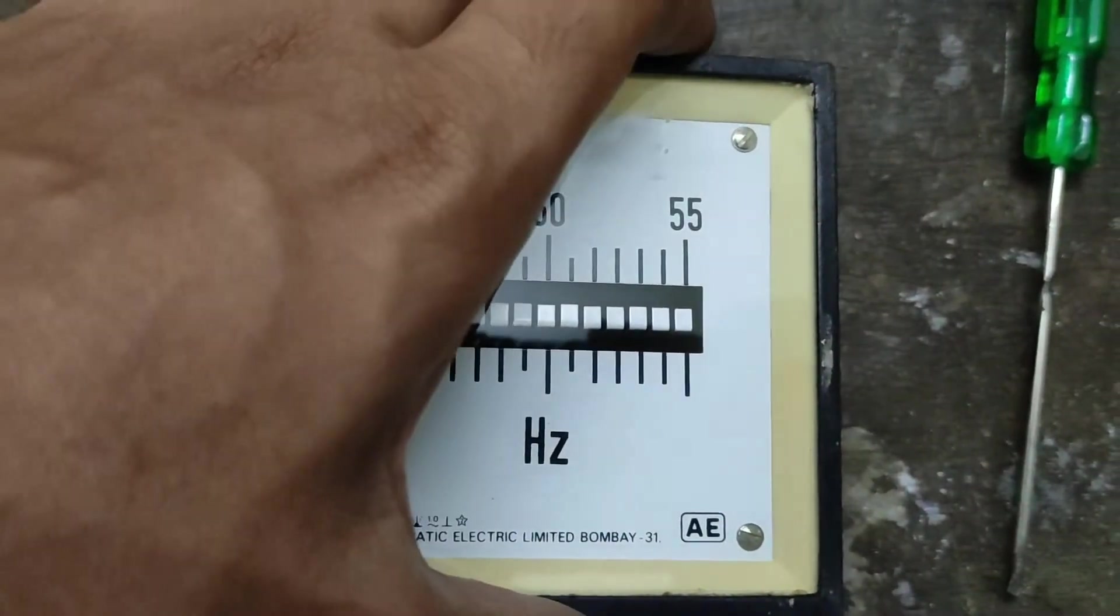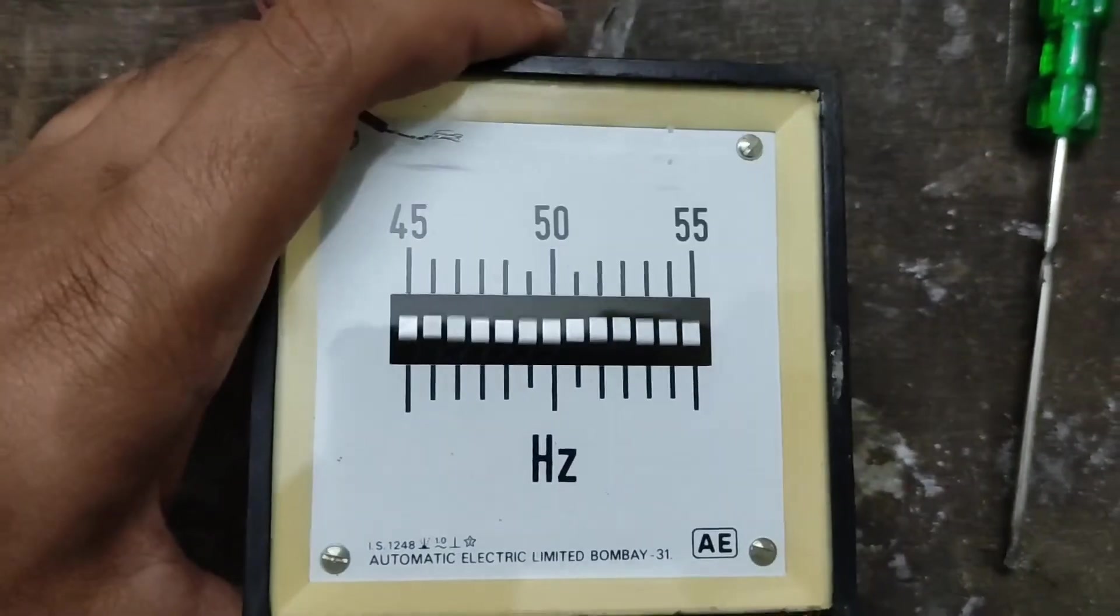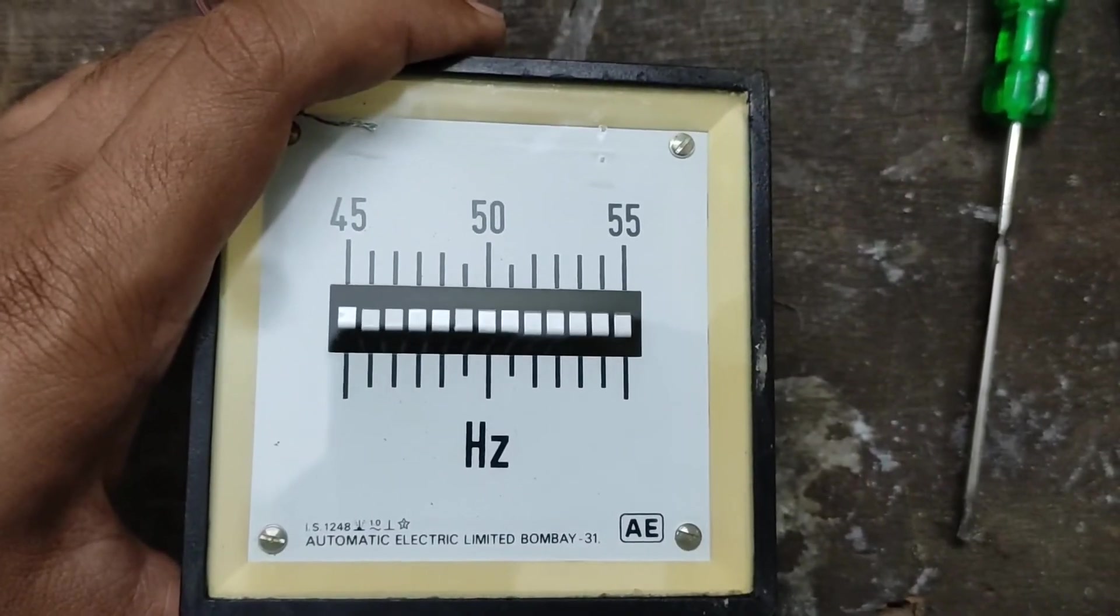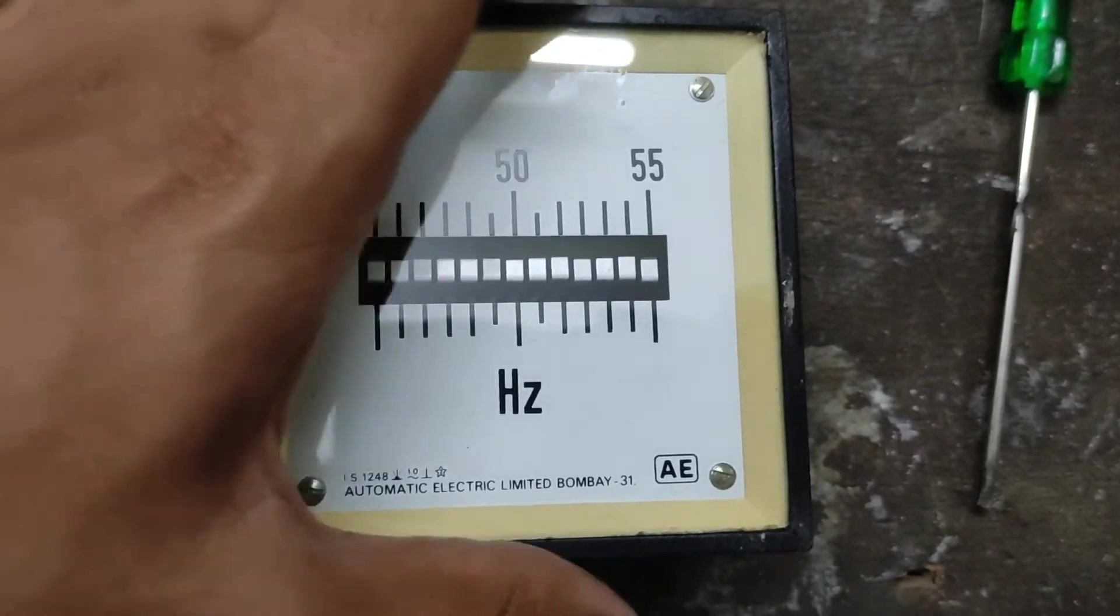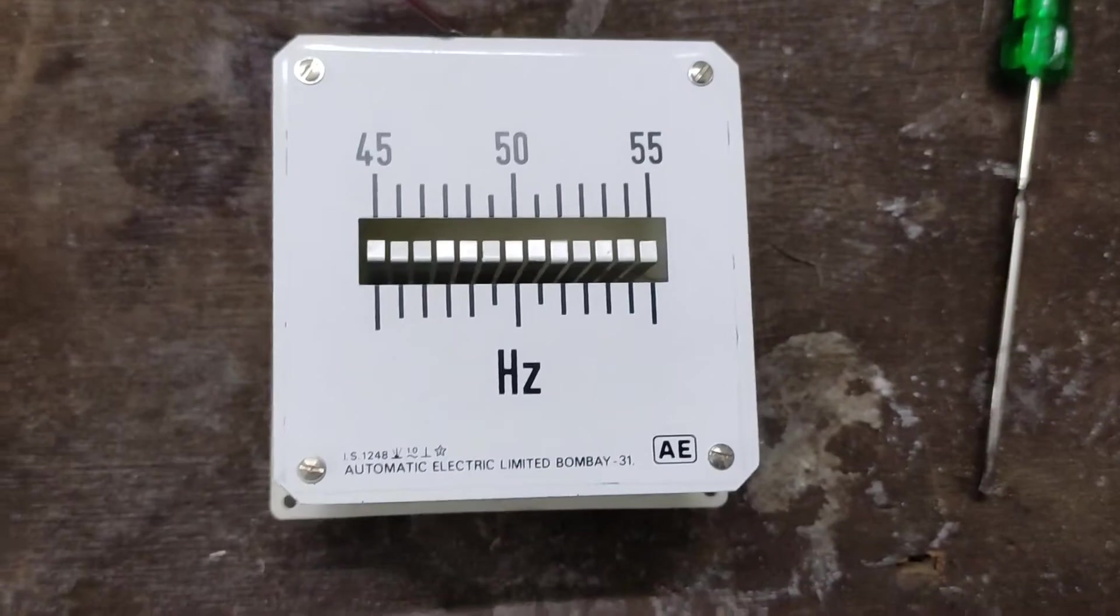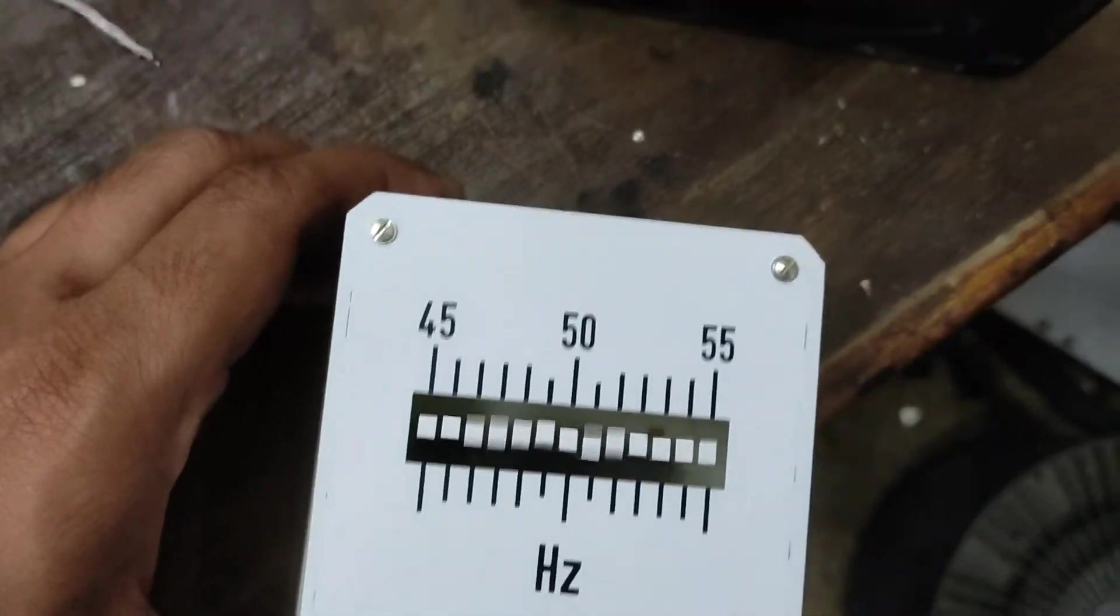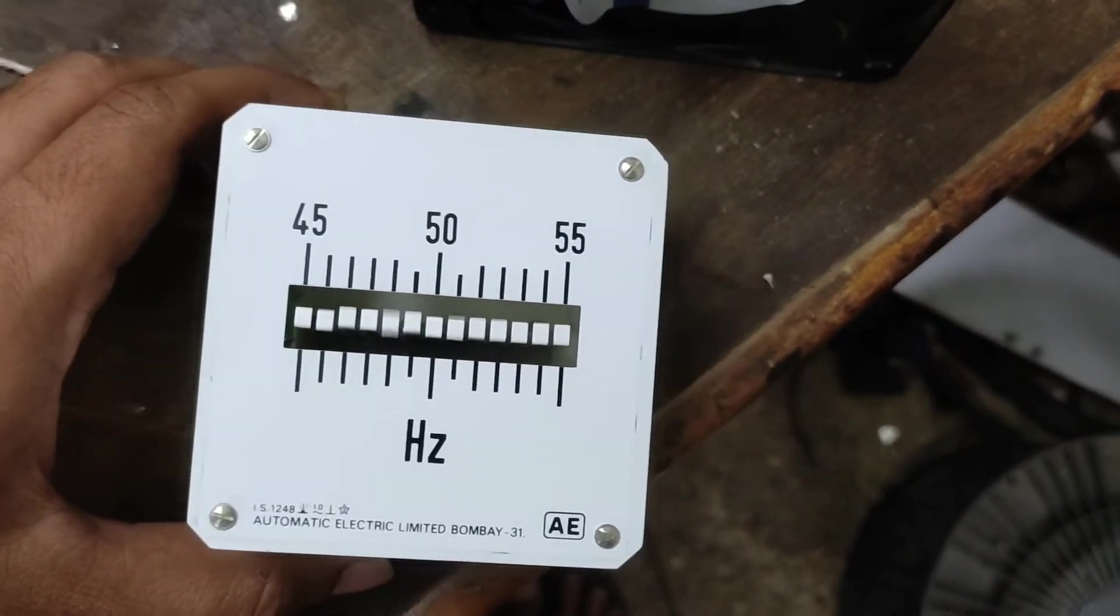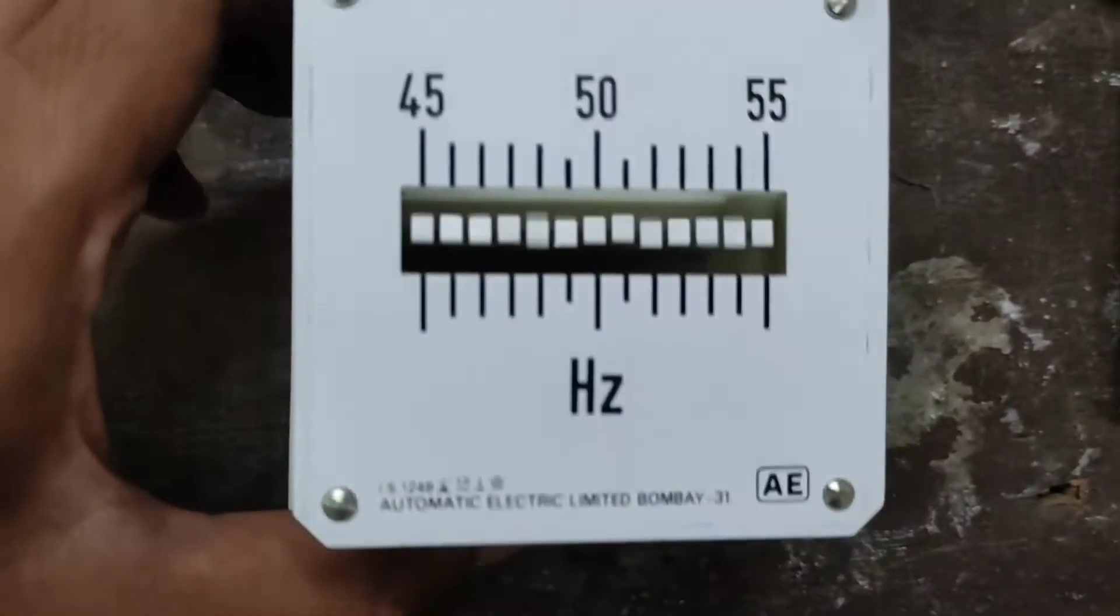You can see how sensitive this equipment is. Just by tapping on the bench, all the reeds vibrate. Even the slightest wind causes the reeds to vibrate. This sensitivity creates a lot of issues during manufacturing and imagine the time and patience needed for calibration of this unit.